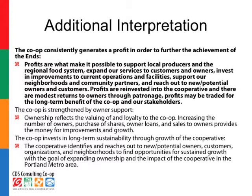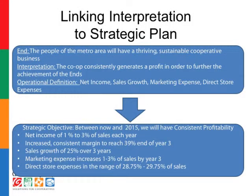She does this with several other components which are also worth reading through. So how did this ultimately connect to strategic objectives? The end we're focused on here is the people of the metro area will have a thriving, sustainable, cooperative business. The interpretation is consistently generating profit in order to further the achievement of the ends. And the definition of the measures will be net income, sales growth, marketing expense, and direct store expenses.